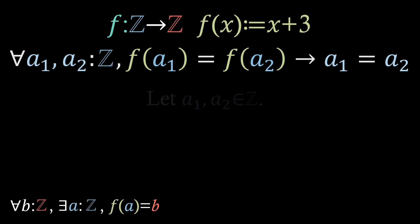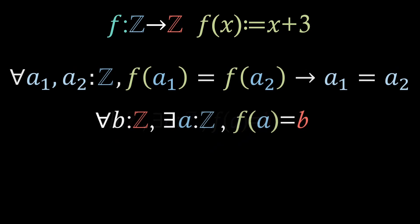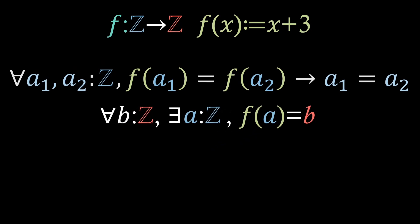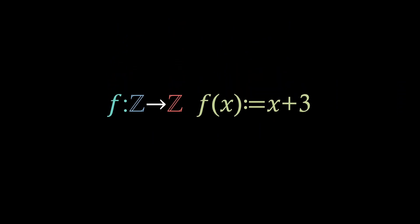We must show that f of a1 equals f of a2 can be turned into a1 equals a2, which is simple, because if we apply the function rule to both sides, and take three away from both sides, we just have that a1 equals a2. Therefore, we've shown the function is both surjective and injective, so it must be bijective.